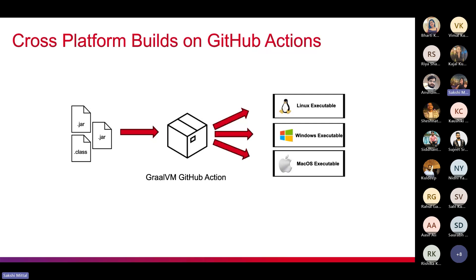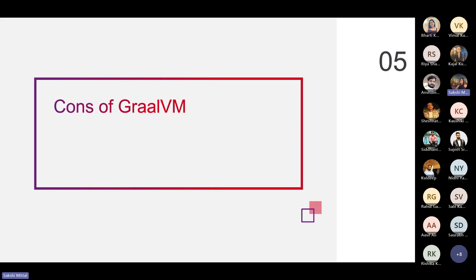To overcome the platform dependency issue, you can use GitHub Actions or any CI/CD tool of your choice and configure the pipeline to create your native image for all target machine configurations. This is how you can overcome that particular constraint.